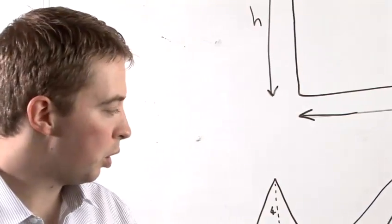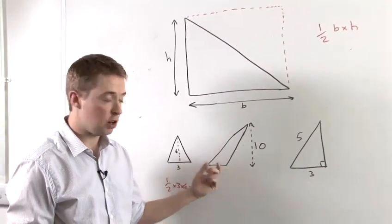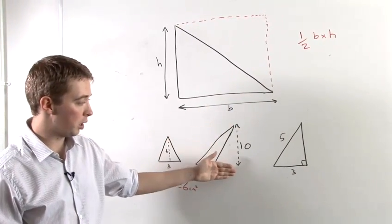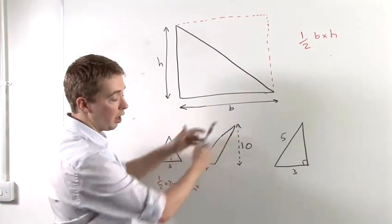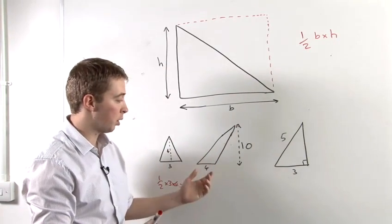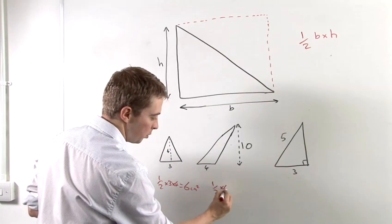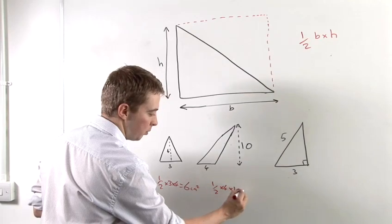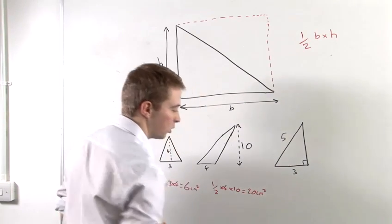If we look at our next example, we have the base, which is 4. And you'll notice that the perpendicular height is 10. We need to take the perpendicular height rather than the length of these two lines. So to work out the area, you have 1 half times 4 times 10, which gives us 20 centimeters squared.